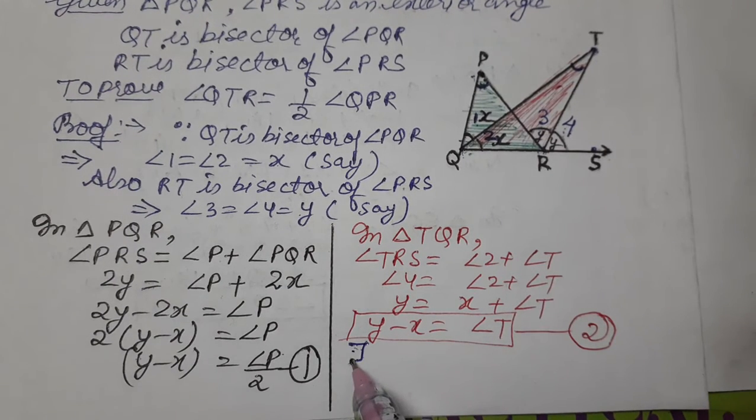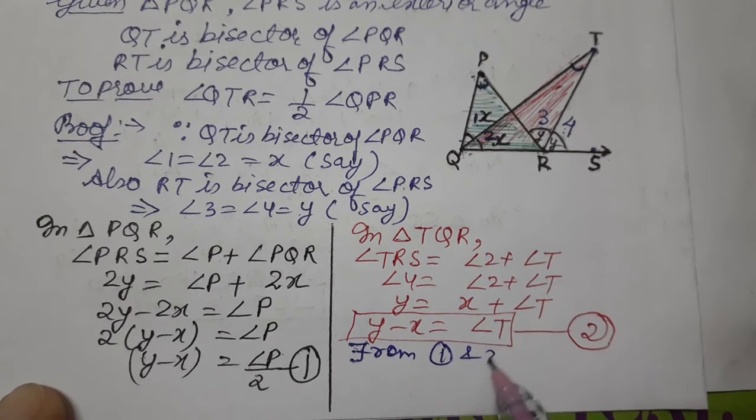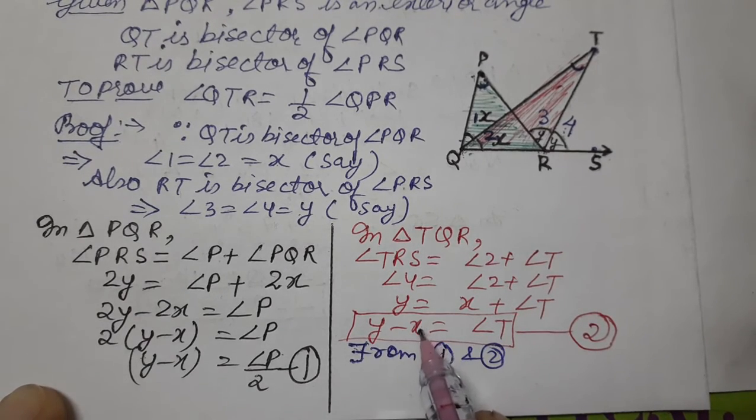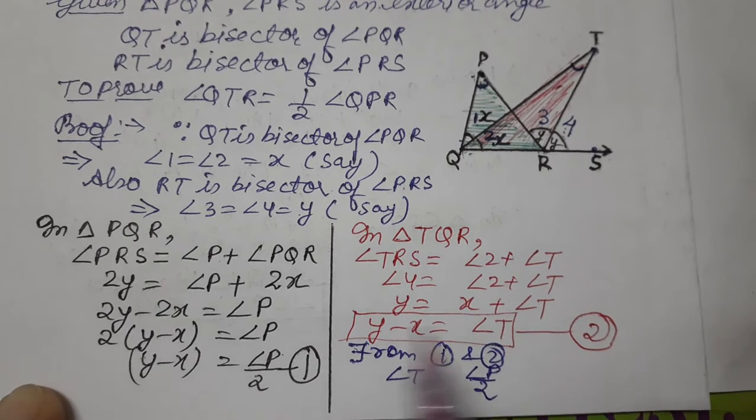From equations 1 and 2, both have y minus x, so what result comes? Angle T equals angle P by 2. These are equal to the same thing, so they are equal to one another.